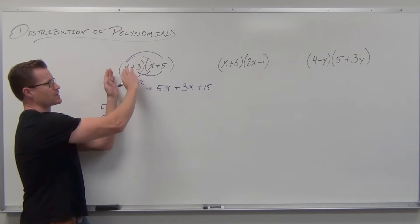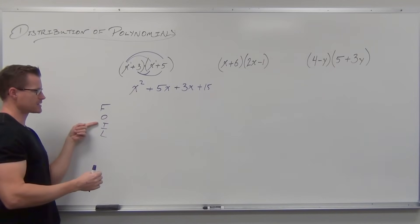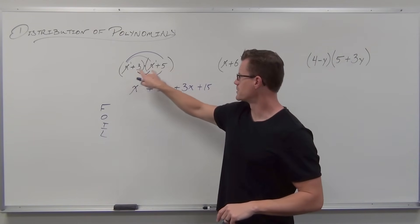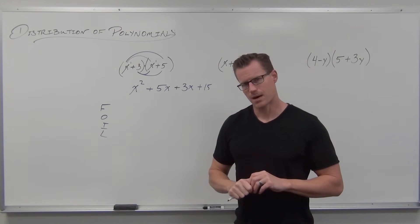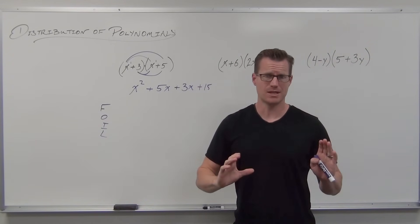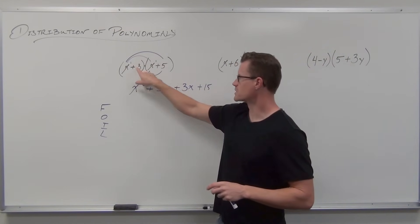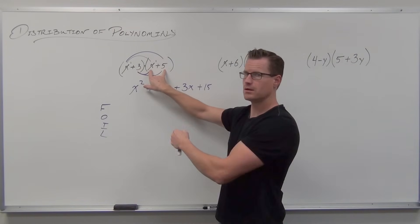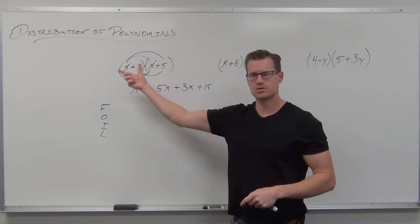That right there is the First, then the Outside, the Inside terms — that's the 3 times the x — and the Last terms. That's where these four terms came from. How many terms did we start with? Two there, two there — 2 times 2 is 4 terms, before you combine any like terms. Just like with monomials, now that we have basically two monomials — x and 3 — every one of those monomials is going to distribute through.